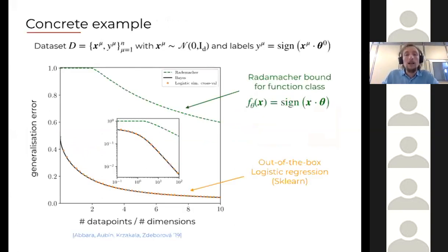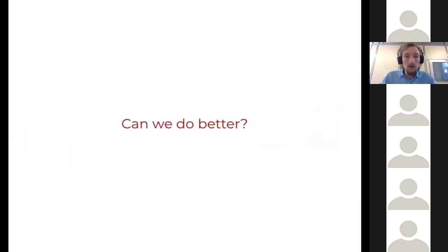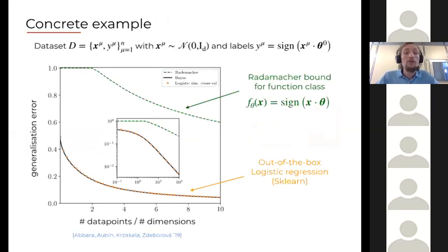Before diving into that, let me get into a concrete example about worst case versus typical case. This is an example I borrowed from some colleagues here in our group in Paris. Consider a very simple classification task of classifying IID Gaussian points with plus or minus one labels which are assigned by a teacher one layer neural network with Gaussian weights theta.